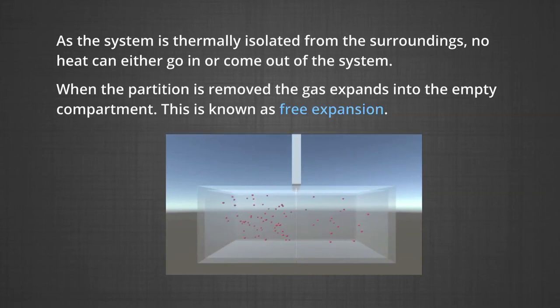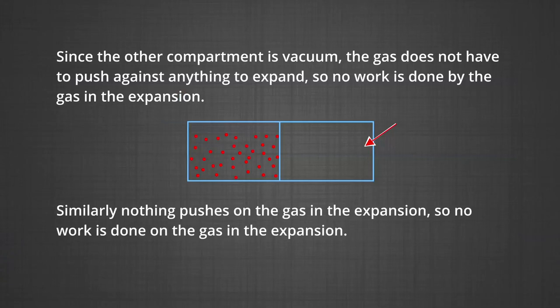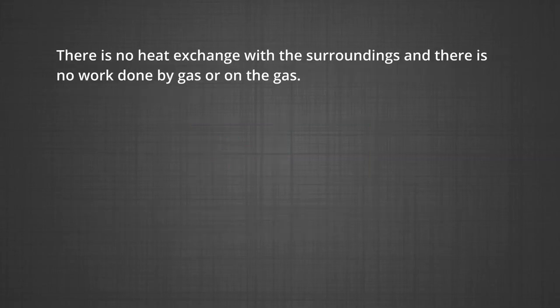When the partition is removed the gas expands into the empty compartment. This is known as free expansion. Since the other compartment is vacuum, the gas does not have to push against anything to expand, so no work is done by the gas. Similarly, nothing pushes on the gas, so no work is done on the gas. There is no heat exchange and no work done.